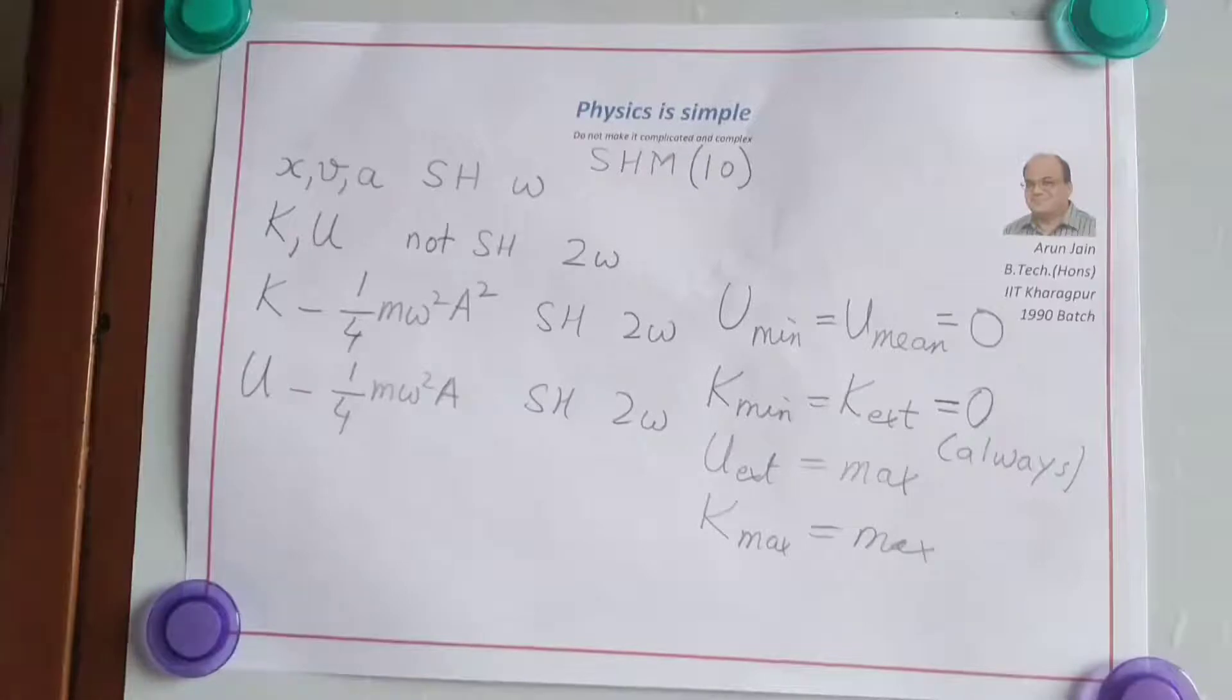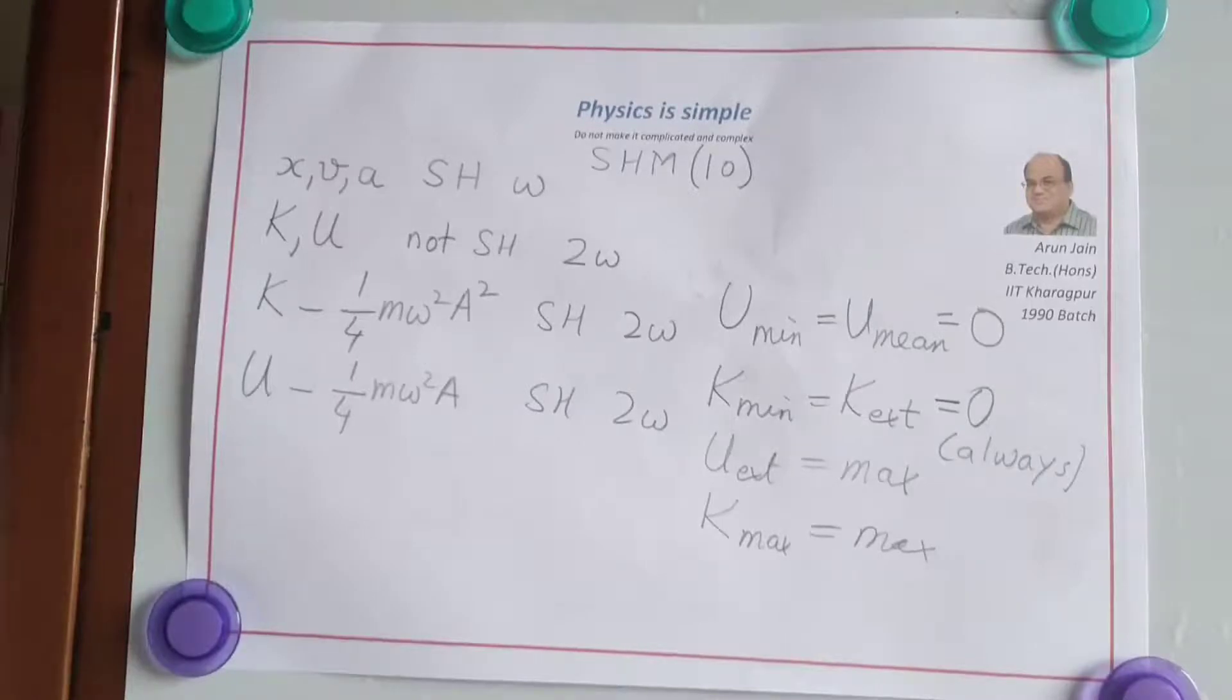Kinetic energy is maximum at the mean position. Potential energy is minimum at the mean position and maximum at the extreme position.